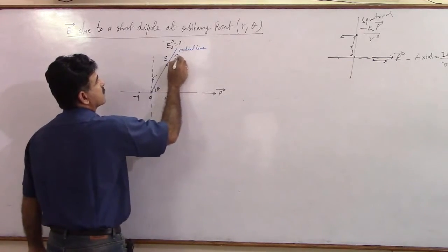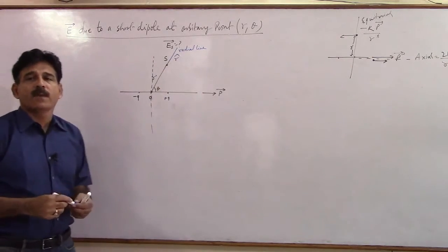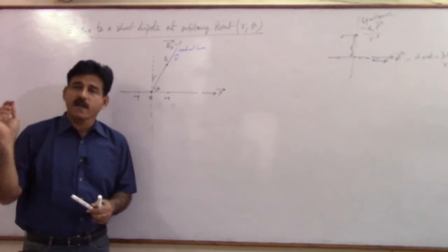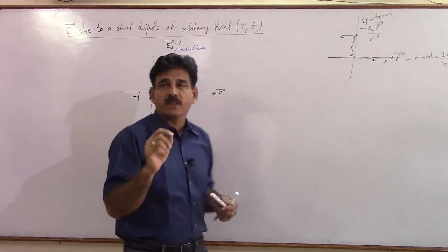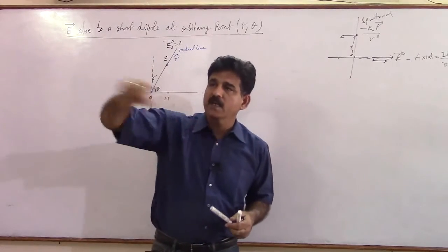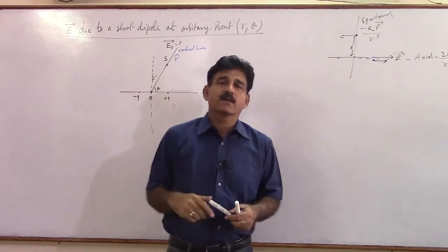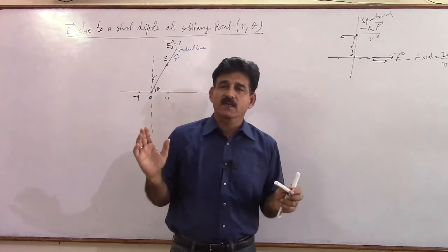And I am denoting a vector here, R cap. Now first understand clearly what is R cap? R cap is from the center of the dipole to the point of observation. If you join and extend that line further, that line will be called radial line.